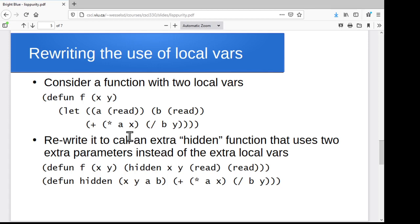So the idea would be we introduce a new function, kind of a hidden private function that takes the two original parameters as parameters, but it also takes a and b as parameters. So now we've got this hidden function that takes four parameters and does the final computation on them.